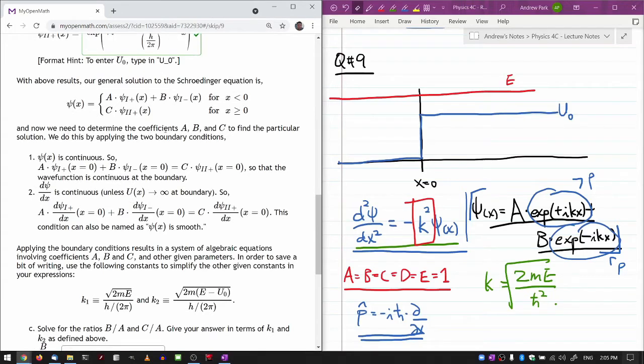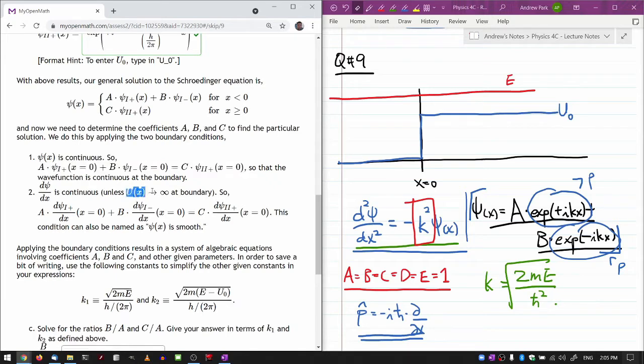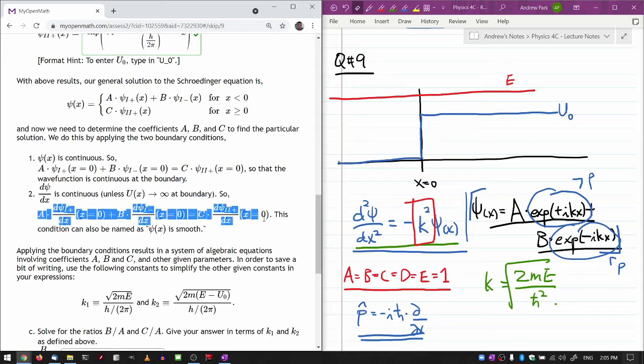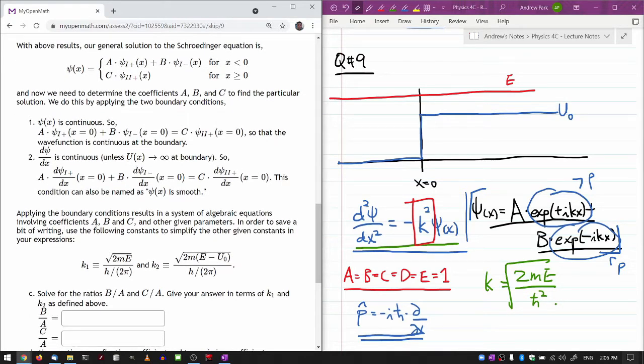So those are the general forms of the solution. With above results, our general solution to the Schrödinger equation is this form of solution where you've written down psi 1 and psi 2 both in terms of positive and negative momentum. That's the general solution. We have that. At least we don't have it written down, but we know what that will be. Now it says we need to determine the coefficients a, b, and c to find the particular solution. We do this by applying the two boundary conditions. That the wave function is continuous and the derivative of the wave function is continuous.